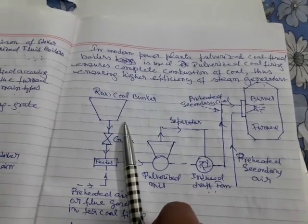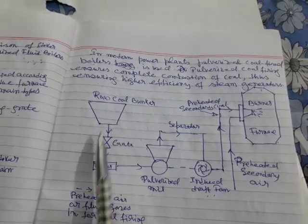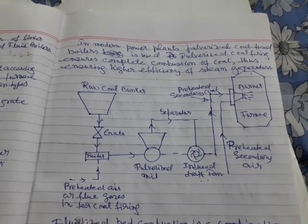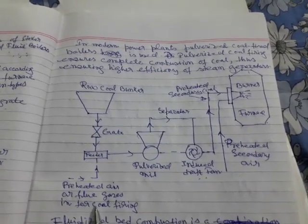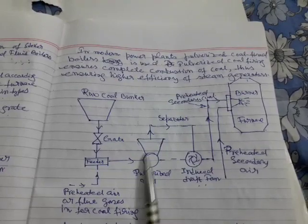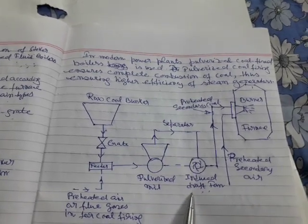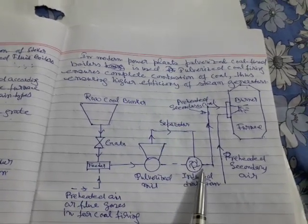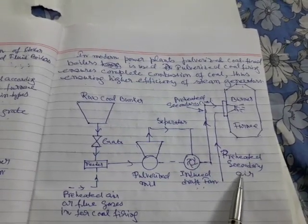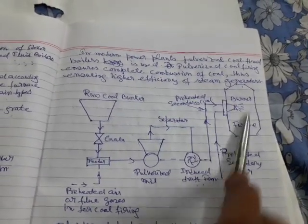In the schematic diagram of the pulverized coal fired boiler: raw coal enters from the bunker through a gate and feeder, preheated air from flue gas enters, and pulverizing takes place in the pulverized mill. After a separator, coal enters via an induced draught fan into the burner. Pulverized coal enters the burner along with preheated primary and secondary air, and burning takes place in the furnace.